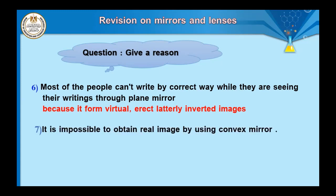Question number seven: it is impossible to obtain a real image using a convex mirror. Because the convex mirror diverges light rays after they fall on it — it is called a diverging mirror. In contrast, a concave mirror can form a real image.